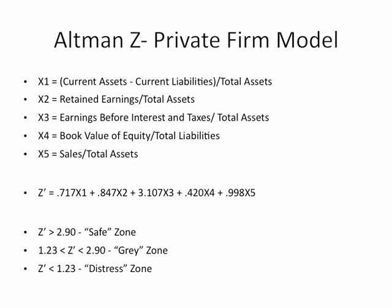Four is the book value of equity — these are private firms, so we're using the book value straight from the balance sheet — divided by total liabilities. And then finally, five is sales divided by total assets, or sales turnover, or asset utilization, as people call it.